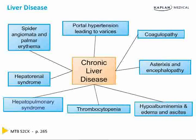Lastly, chronic liver disease leads to portal hypertension, which can lead to the development of varices in the esophagus, stomach, and rectum. You combine varices with coagulopathy, and you now have a combination for disaster.